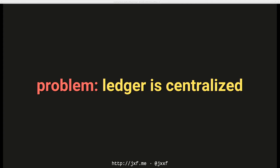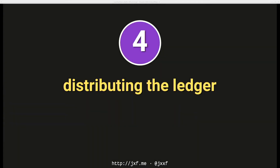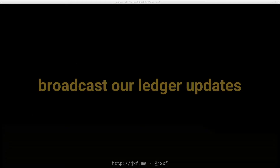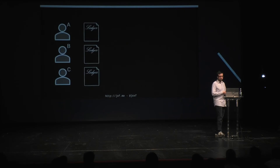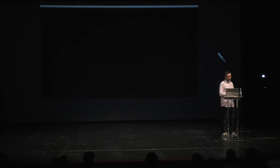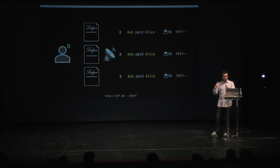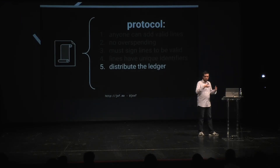We require that lines have unique identifiers. There's one final problem: the ledger is centralized. We have to trust the central location — the whiteboard everyone writes on. It would be better to distribute the ledger. If we give Alice, Bob, and Carol each their own copy, every time they want to make an update they broadcast it to everybody else in the network. Bob sends an update to Alice and Carol saying 'please add this transaction to your ledger.' You just have to trust your own copy.